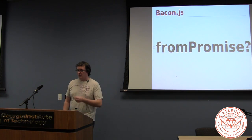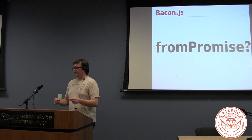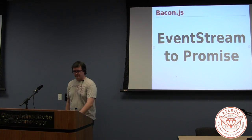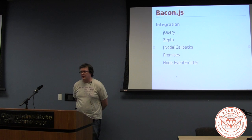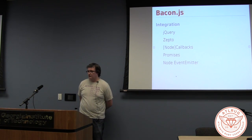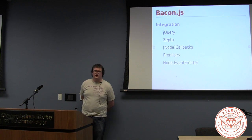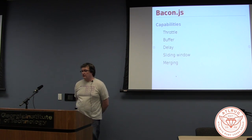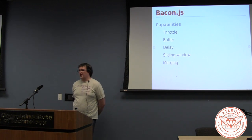Bacon.fromPromise will take any normal conforming promise and automatically unwrap it. You've also got the option to do fromCallback, where you can use an arbitrary callback. Bacon.js integrates with jQuery, Zepto, Node callbacks, general promises, and the proper Node event emitter. There are also things like throttle and debounce, which are pretty close to the same thing. Buffer lets you do things like buffer for half a second, and then it'll push through the event stream — as an array — everything that came in in the last half second. Or you could say buffer 100 items to process things in batches of 100.